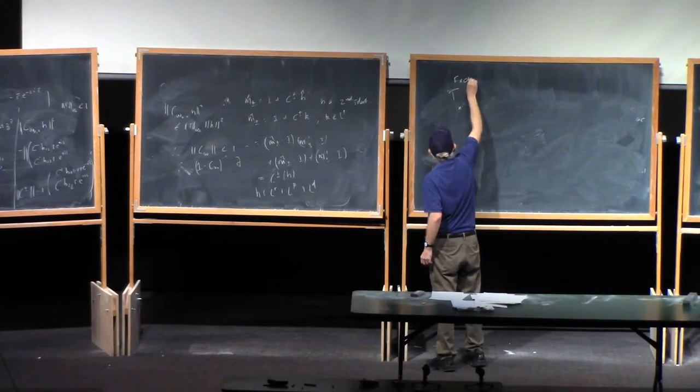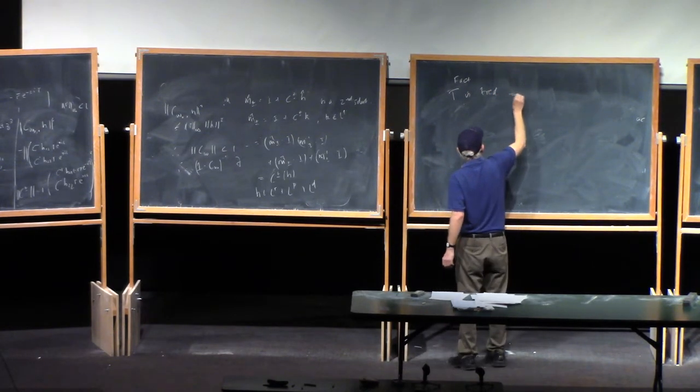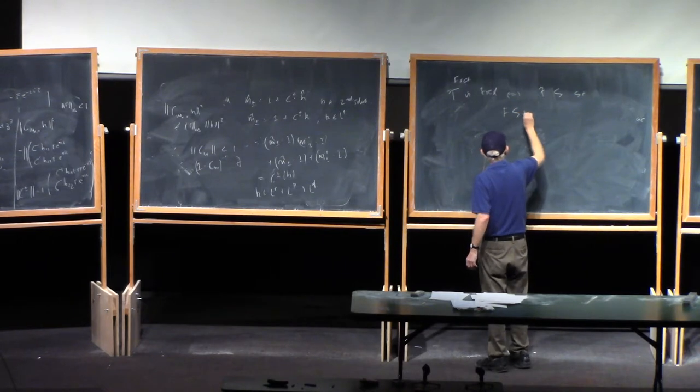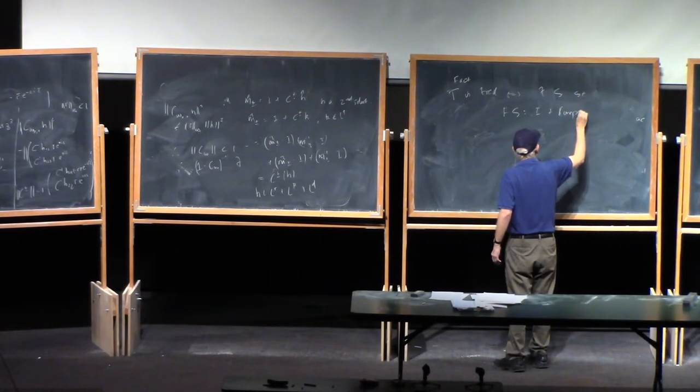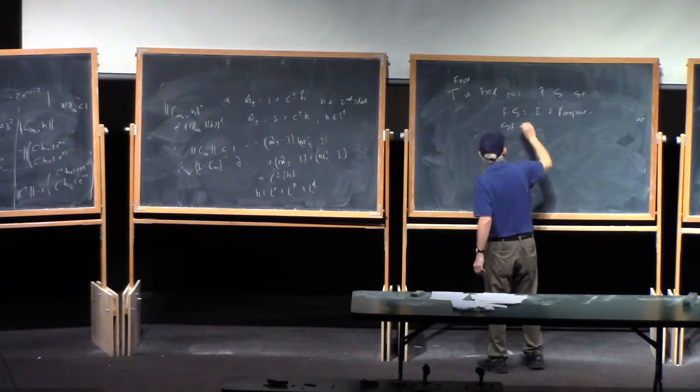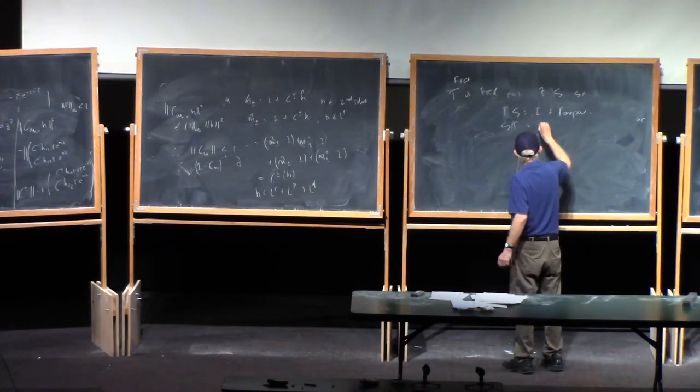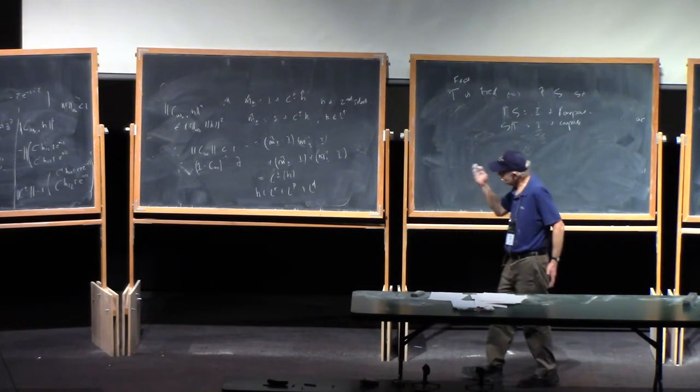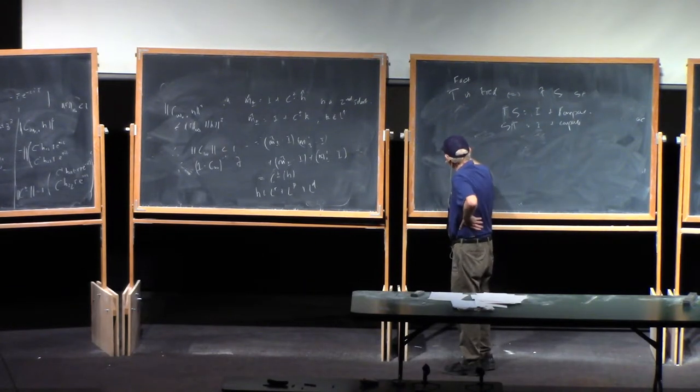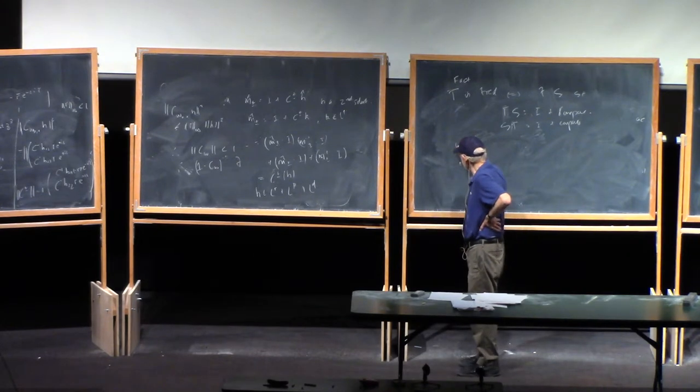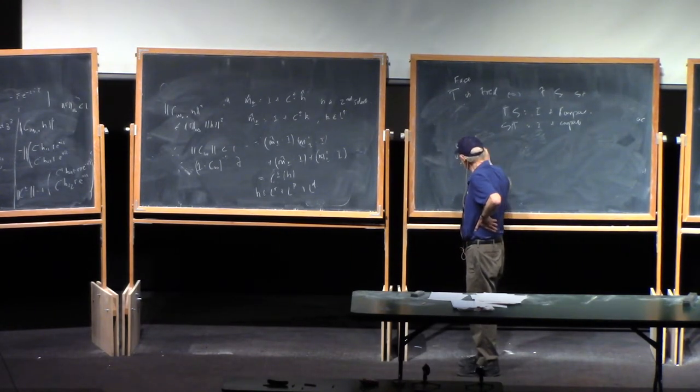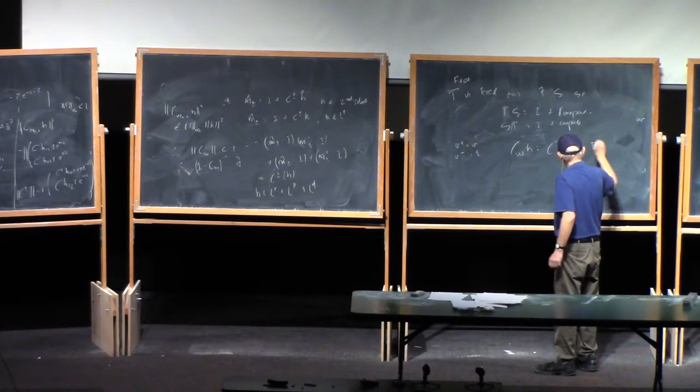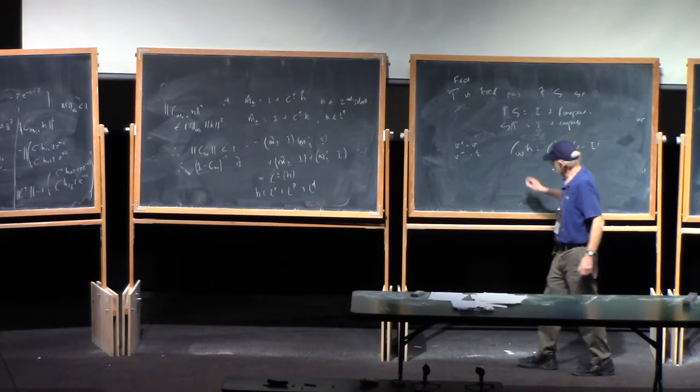We'll use the following fact. The operator 1 minus C is Fredholm if and only if there exists an operator S, such that FS is identity plus compact, and SF is also identity plus compact. It's called the pseudo-inverse. And what I leave for you as an exercise is to show that if we take, you can take any factorization, we're going to take a trivial factor as V plus equals V, and V minus is the identity. And CW on H will just be C minus H of V minus 1. This is W, W plus. Now we introduce a new operator. CW tilde of H is just C minus of H V inverse.